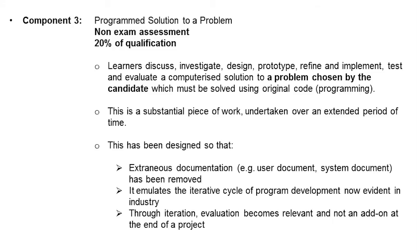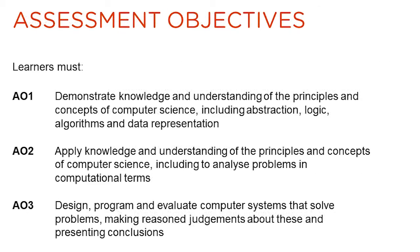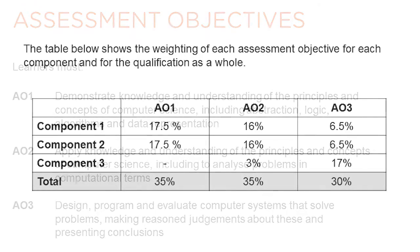This non-exam assessed component forms 20% of the qualification. The assessment objectives for A-Level Computer Science consist of three key elements, and learners are required to demonstrate these key objectives across all three components. The weighting of each objective varies across the components — for example, a greater emphasis is placed upon AO3, design, program and evaluate computer systems, in Component 3.